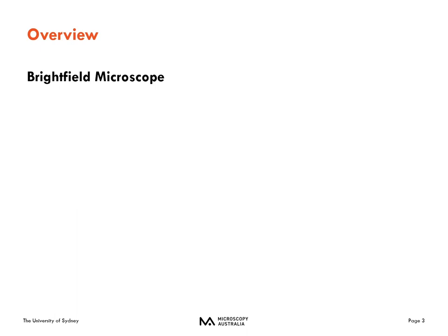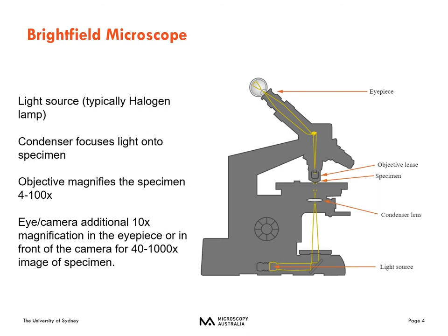Just a quick reminder of the brightfield microscope. It has a light source, typically a halogen lamp. The condenser focuses the light from that halogen lamp onto the sample, and then the objective magnifies the sample — typically anywhere from four to a hundred times. At the eyepiece or in front of the camera, there's typically an additional 10x magnification, giving you anywhere from 40 to 1000x.